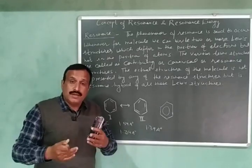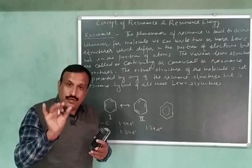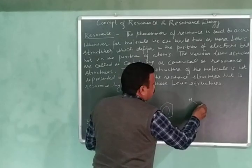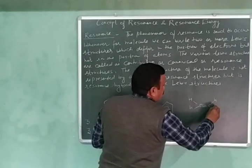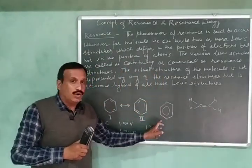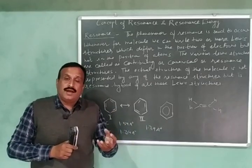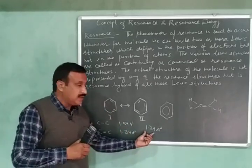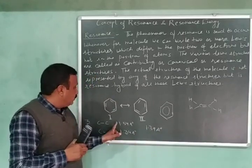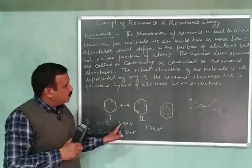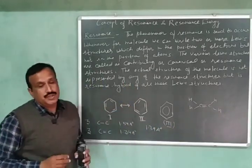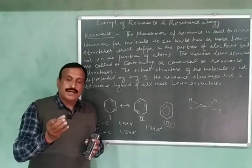Due to this movement, every single bond in the benzene ring acquires a partial double bond character. I am using the word 'partial' because we are not going to have a pure double bond — for a pure double bond, the electrons must be localized or fixed between two joining carbon atoms, as in the case of ethene. But due to this delocalization, every carbon-carbon bond acquires a partial double bond character and their bond length becomes the same, equal to 1.39 angstroms. This structure is called as the resonance hybrid structure of benzene, and this phenomenon is called as resonance.